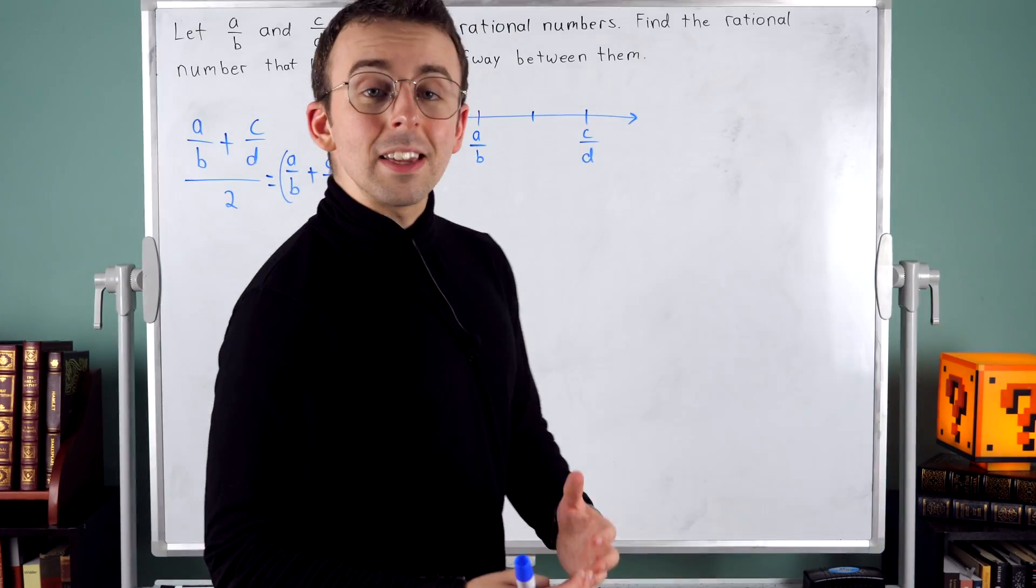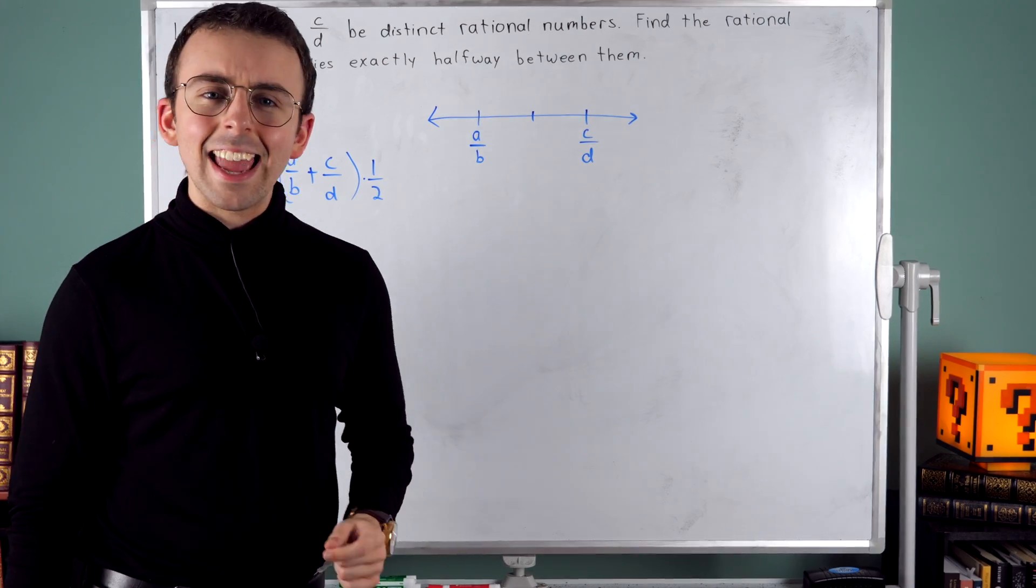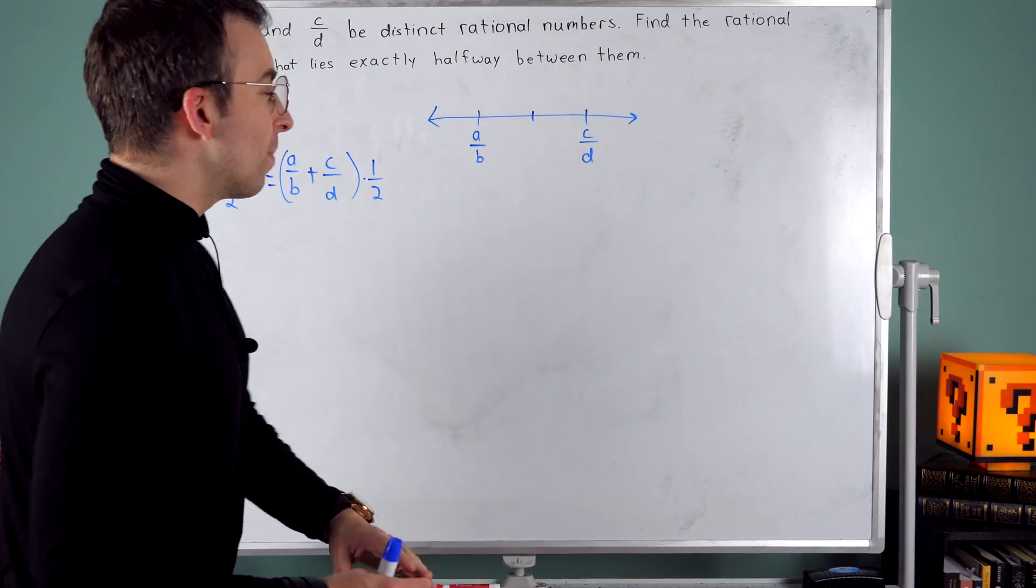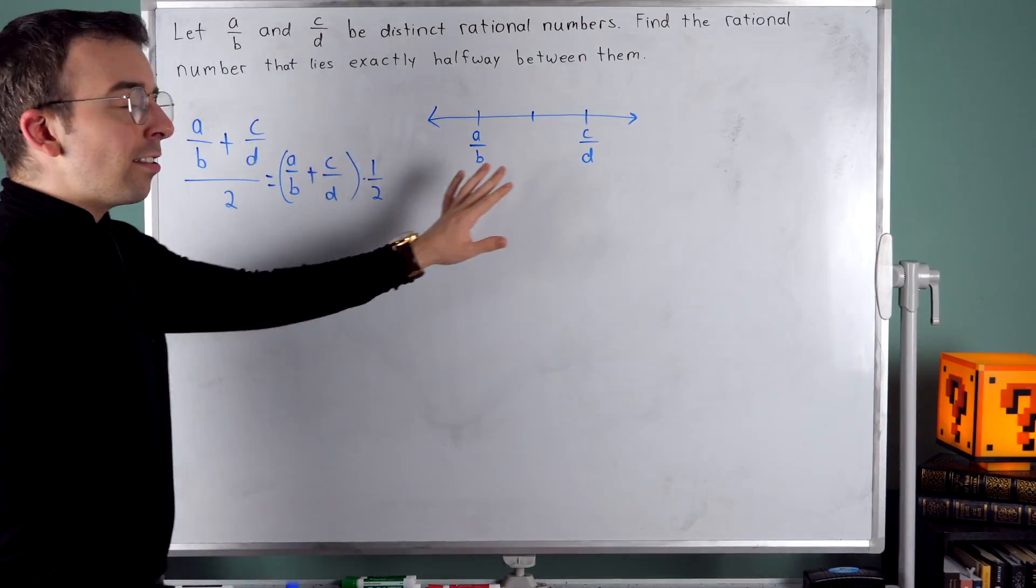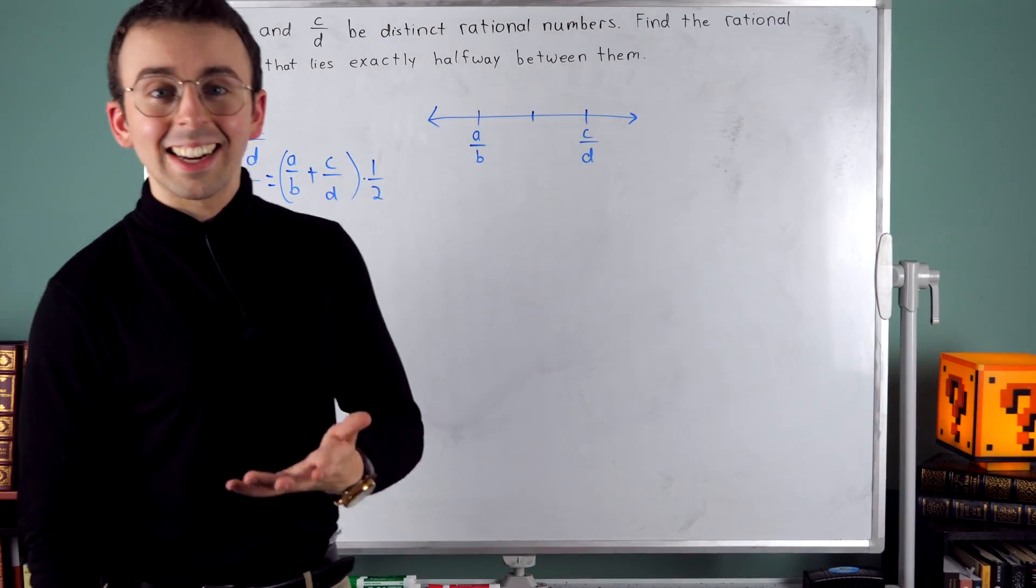But you might not know that the average of two numbers happens to be the number that's exactly halfway between them. So instead of finishing this, let's start the problem thinking a little bit more slowly and we'll come to the same exact answer.